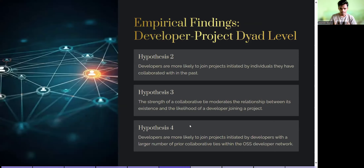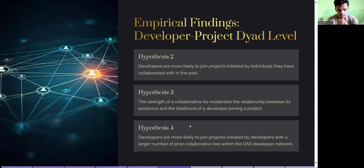At the developer-project level: Hypothesis 2 states that developers are more likely to join projects initiated by individuals they have previously collaborated with. Hypothesis 3 states that the strength of a collaborative tie moderates the relationship between its existence and the likelihood of developers joining a project. Hypothesis 4 states that developers are more likely to join projects initiated by developers with a large number of prior collaborative ties within the OSS developer network.